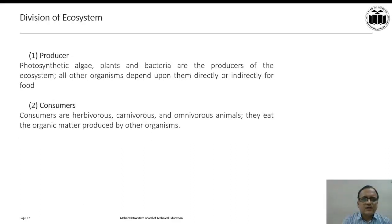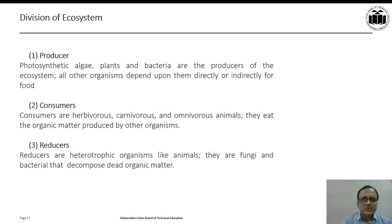Consumers are herbivorous, carnivorous, and omnivorous animals. They eat the organic matter produced by other organisms. Reducers are heterotropic organisms like animals. They are fungi and bacteria that decompose dead organic matter.